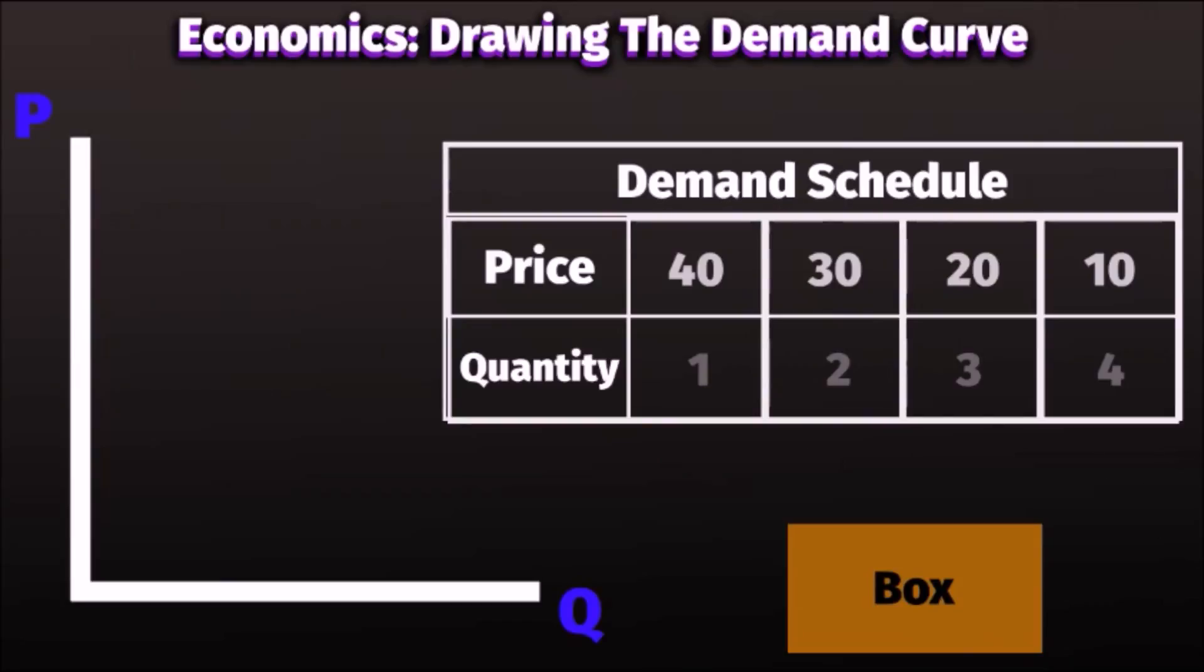So we can go ahead and plot our points one by one on the graph: 40 and 1, 30 and 2, 20 and 3, and 10 and 4.